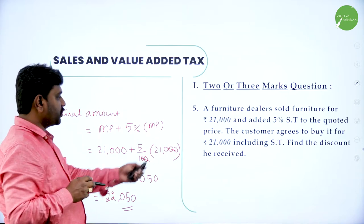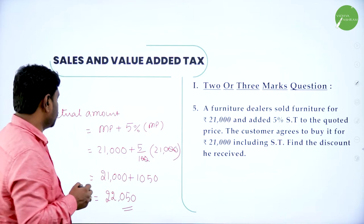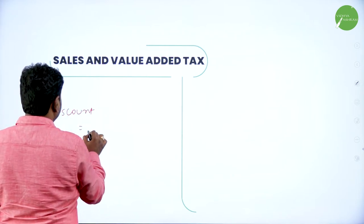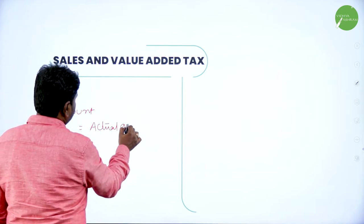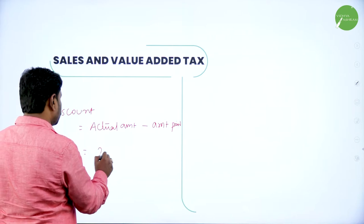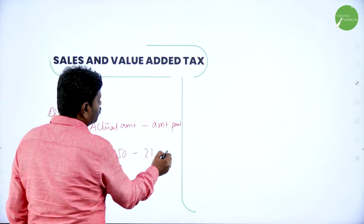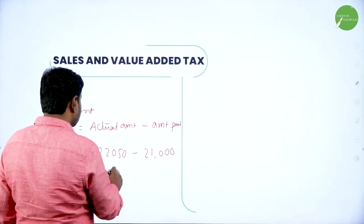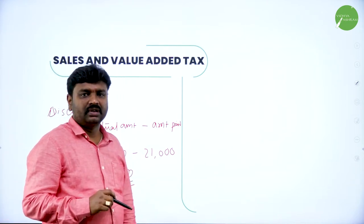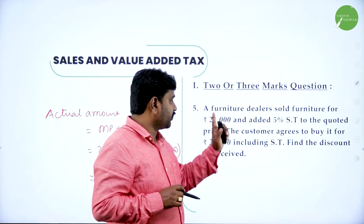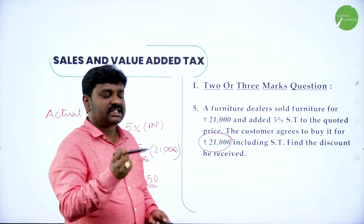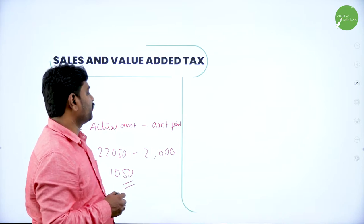But the customer is not paying 22,050 — he is paying only 21,000 including tax. The remaining amount is discount for him. Discount equals actual amount to be paid minus amount paid: 22,050 − 21,000 = 1,050 rupees. So the discount received is rupees 1,050, which equals the sale tax amount.